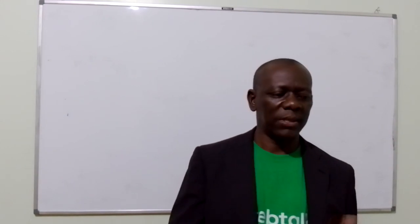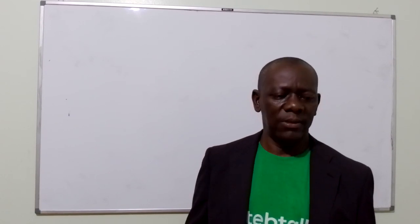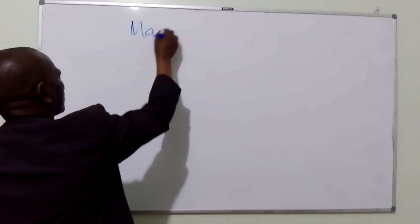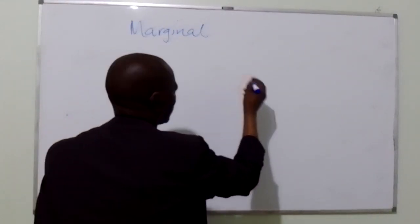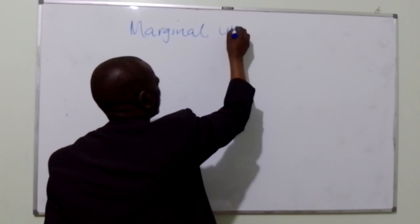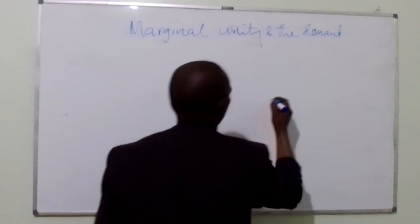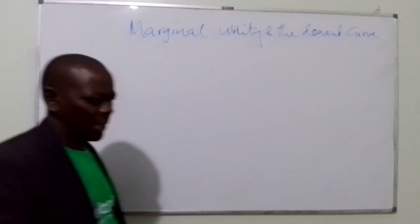The driving force behind the willingness to buy something is the utility. Your willingness to buy something depends on the utility that you expect to get from a product. If the utility you are going to get from a product is low, your willingness to pay the stated price is going to be affected. Therefore, marginal utility has a direct relationship with the demand curve.